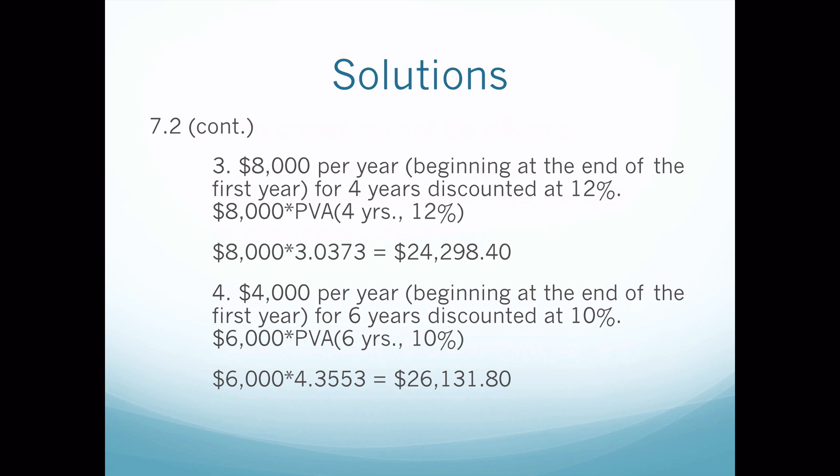The second annuity problem is $4,000 a year for six years at 10%. I write it out as $4,000 times PVA(6 years, 10%). The multiplier is 4.3553, and when I do the math it comes out to $26,131.80. All four of these present value problems should have been pretty straightforward.